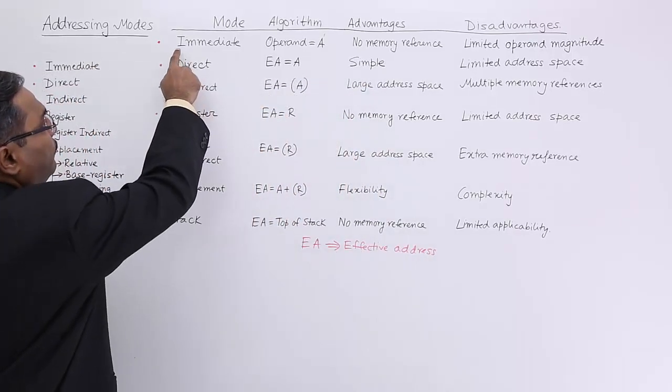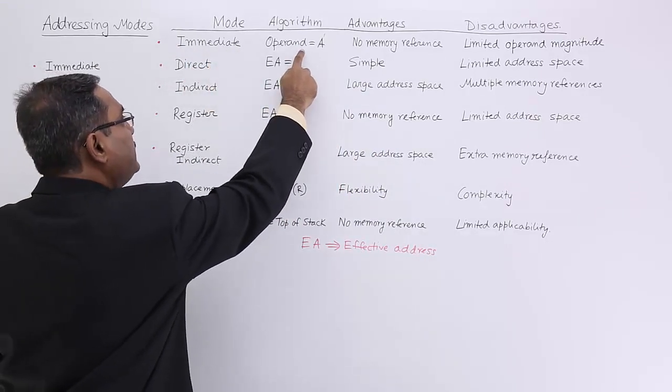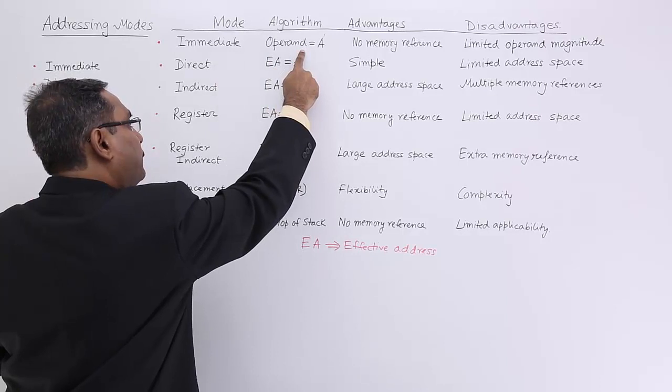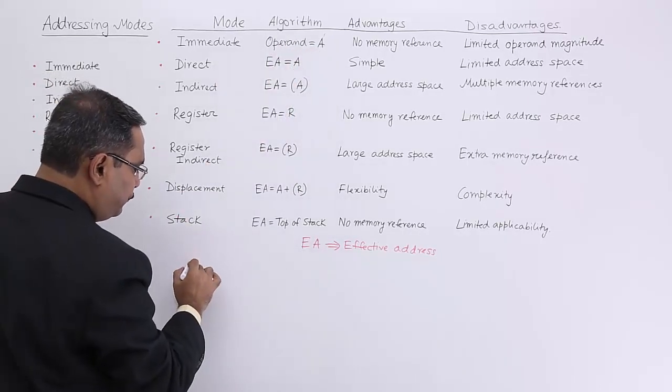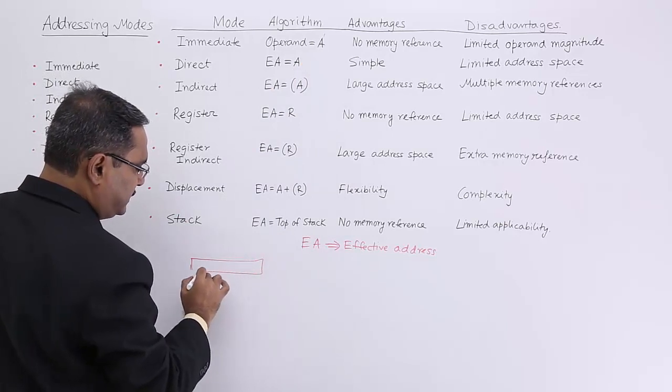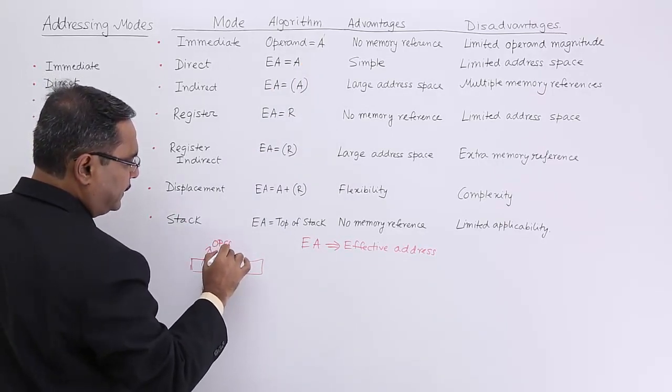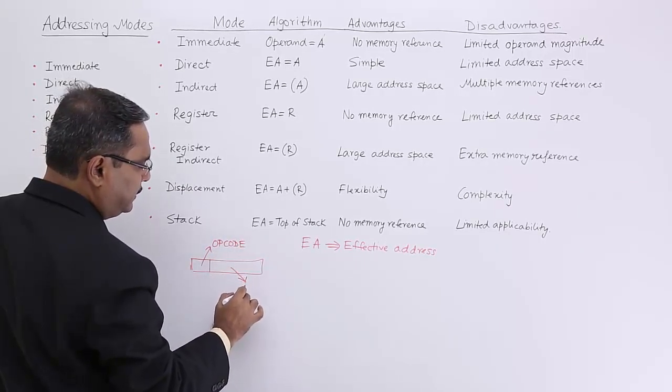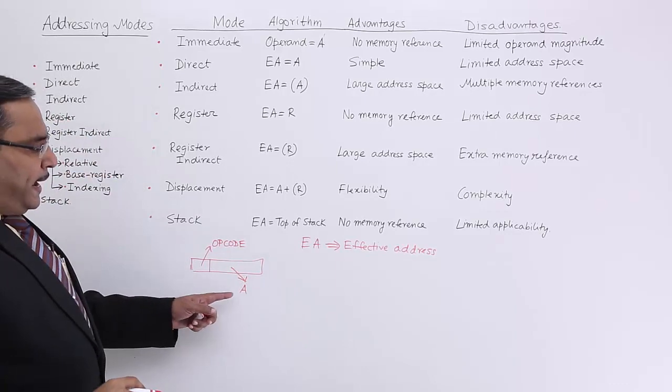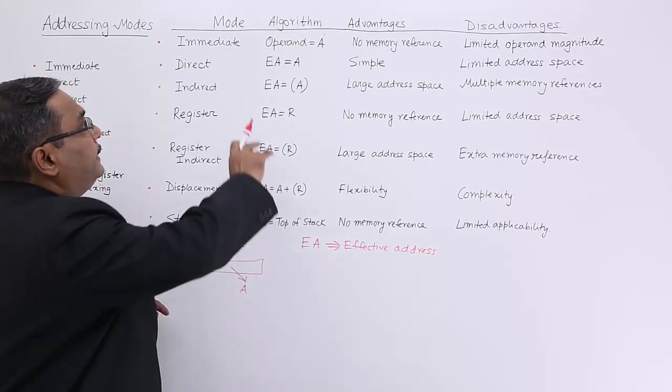Now we are going for this immediate mode where operand will be obtained from the address field because the address field, that means this instruction is having two fields mainly. This is my instruction, it is having two fields: this is the opcode and this is the corresponding address field.